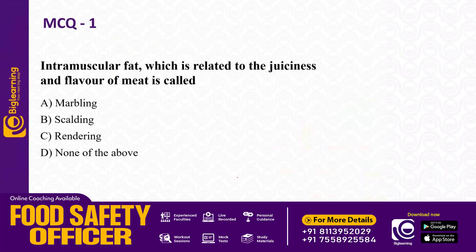First question: intramuscular fat which is related to the juiciness and flavor of meat is called — marbling, scalding, rendering, or none of the above. The answer is marbling.